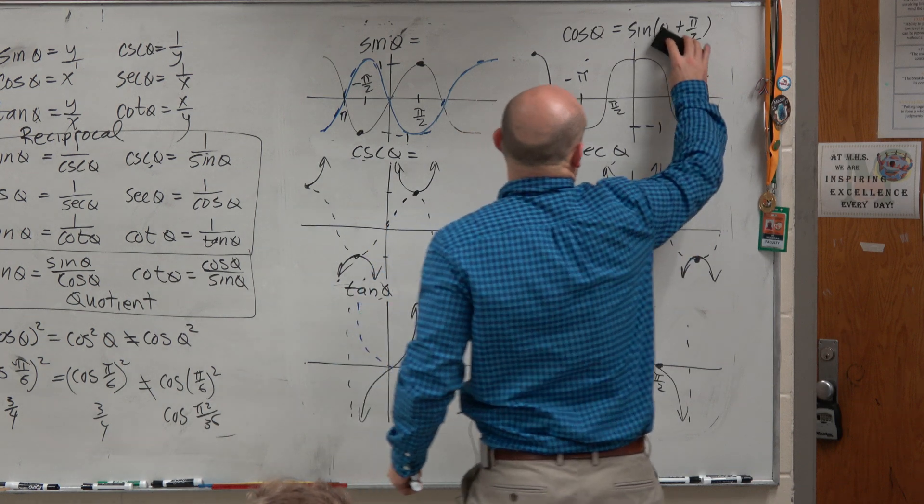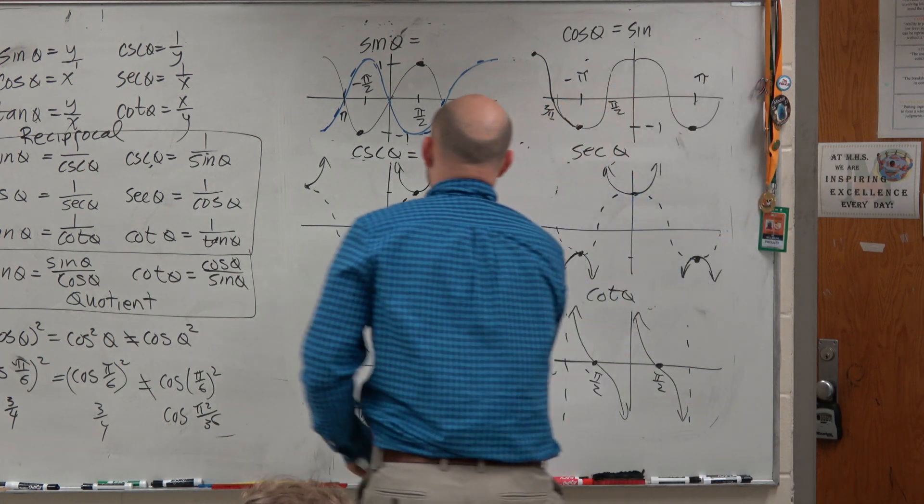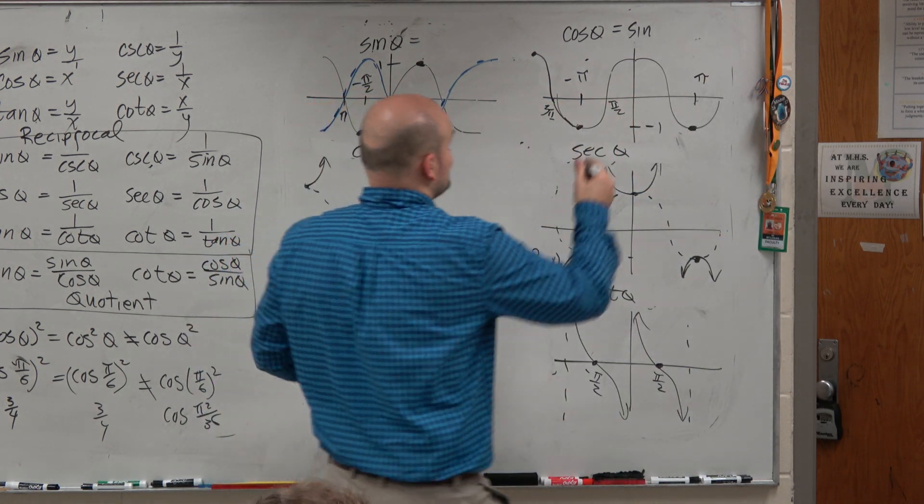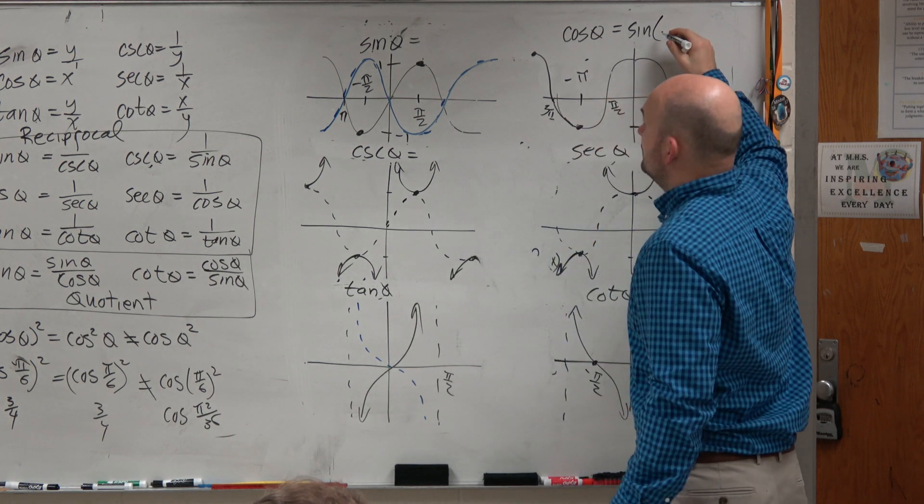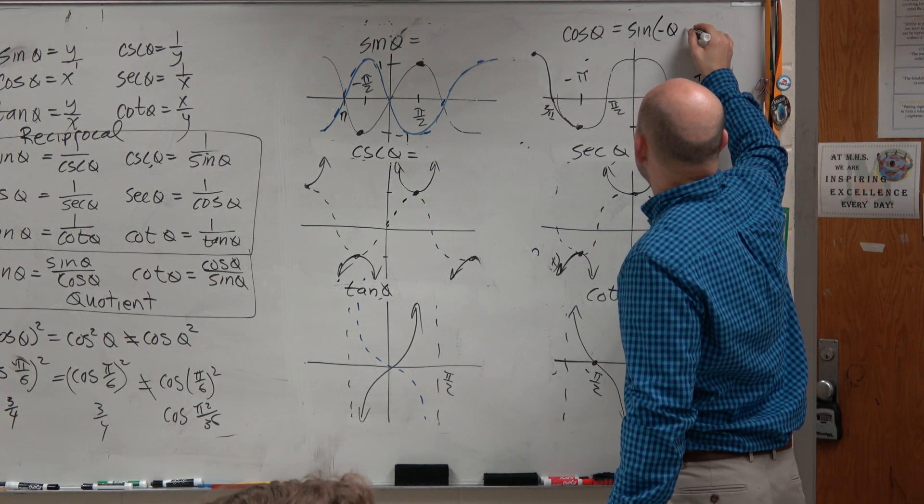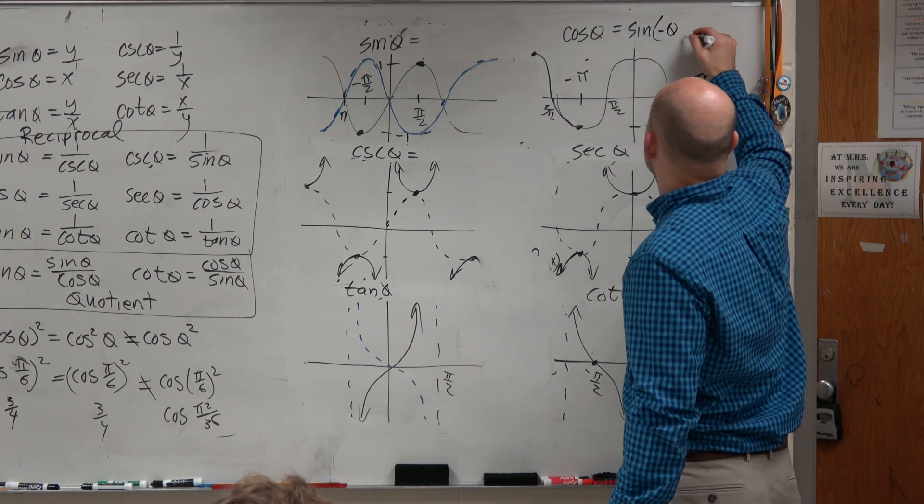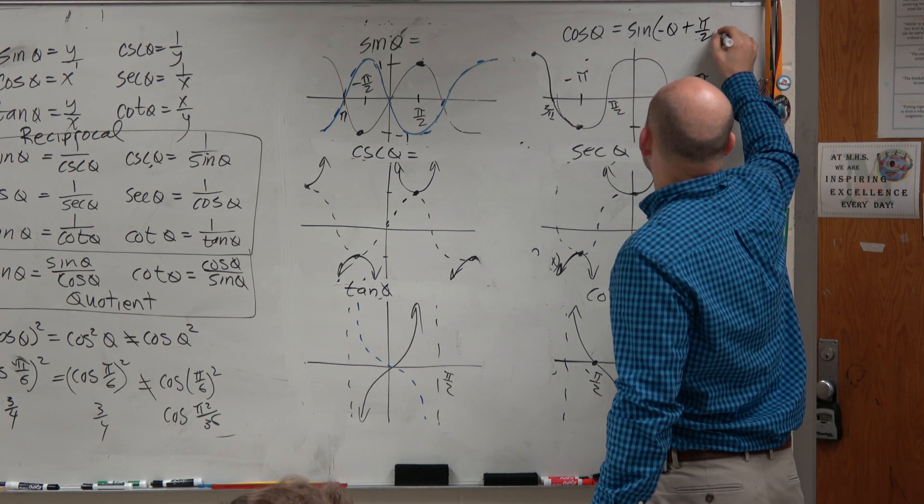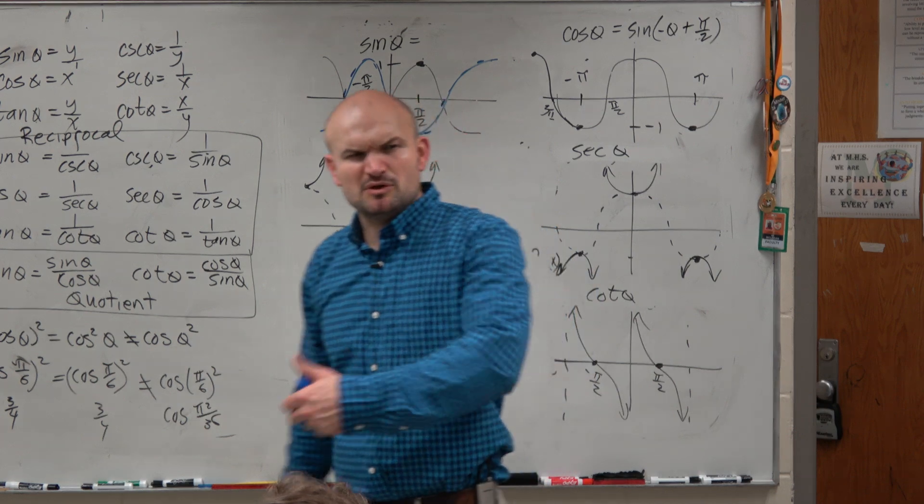So when we're writing this, for us to get cosine, we have to reflect it about the y-axis here. So that's going to be a negative. And then we have to shift it to the right. So I'm going to write it like this. Now you guys might say, but Mr. McGillen, that's to the left.